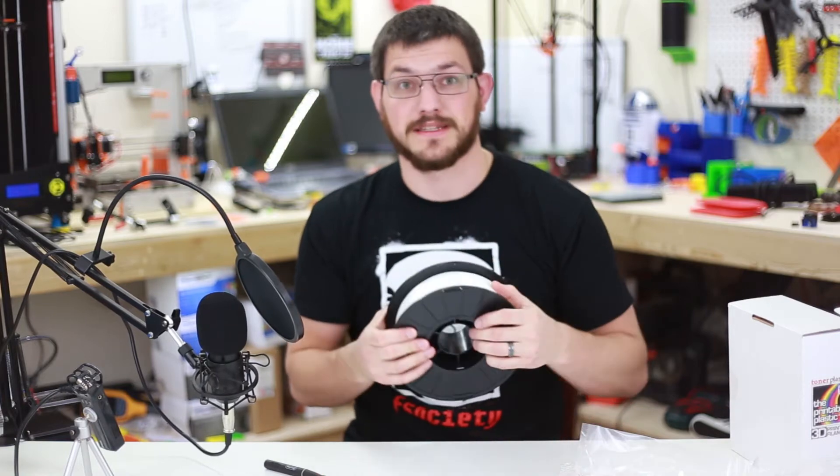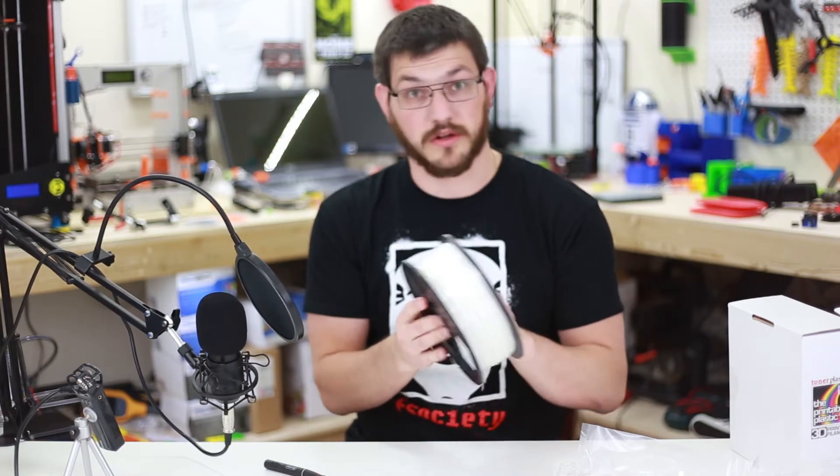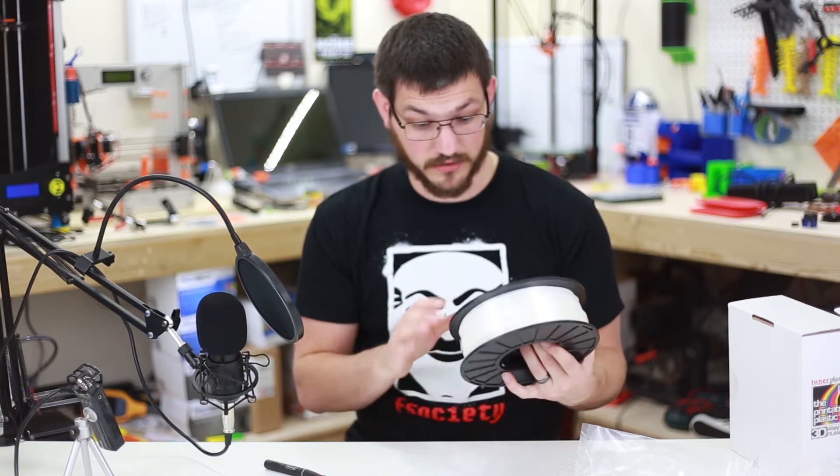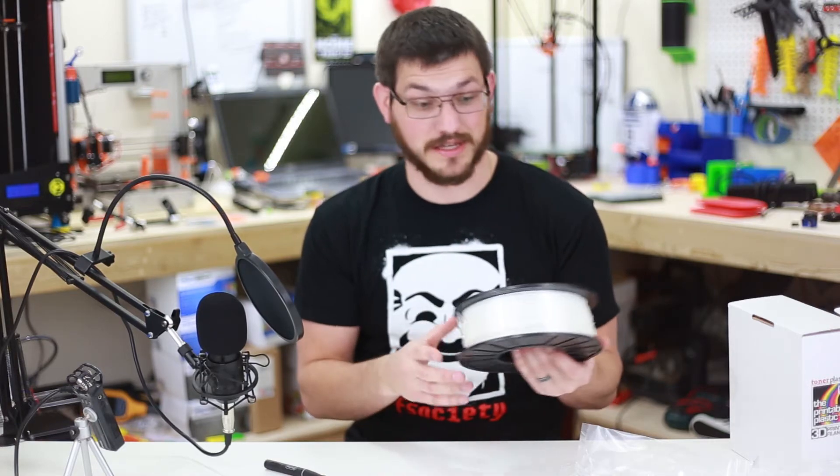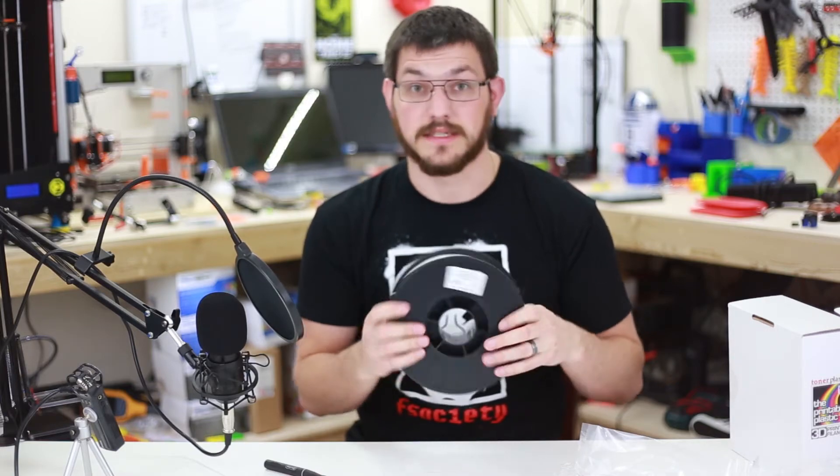It definitely is a darker white, dirty white, that pearl looking color. And it is very smooth. I expected it also to have a type of texture to it, but not at all. This just feels like regular old PLA. And looking at the temperatures, it's going to print just like regular old PLA as well. So let's put this on the printers and see how it turns out.